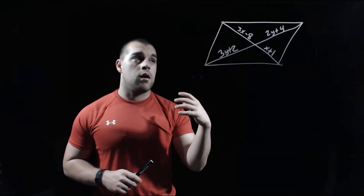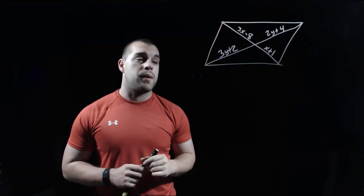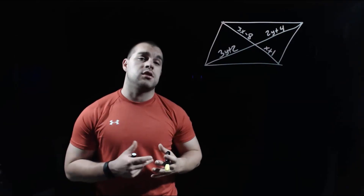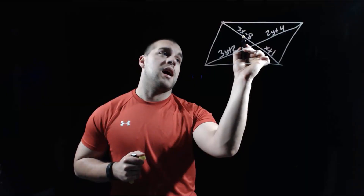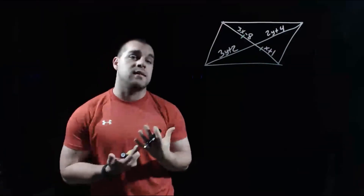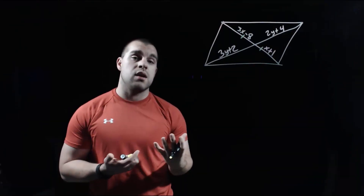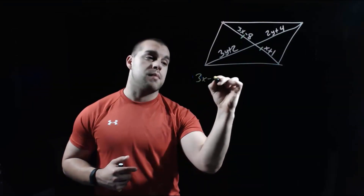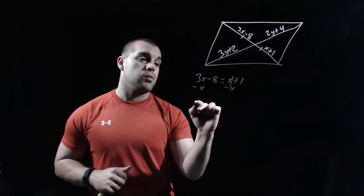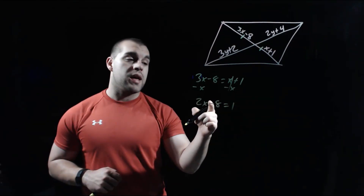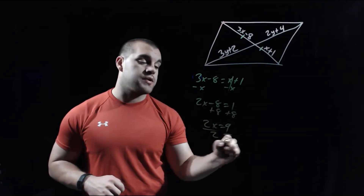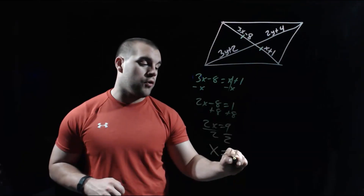The only property we haven't dealt with yet is that the diagonals bisect each other. I've already got the diagonals drawn in and labeled with expressions. The top-left piece is congruent to the bottom-right piece — both labeled with x expressions — so we set them equal: 3x minus 8 equals x plus 1. Subtracting x gives 2x minus 8 equals 1; adding 8 gives 2x equals 9; dividing by 2 gives x equals 4.5.